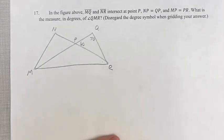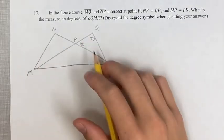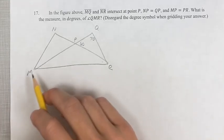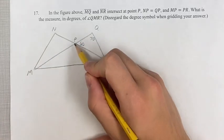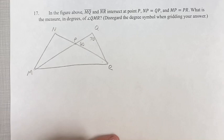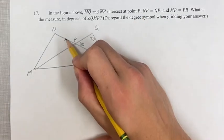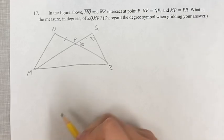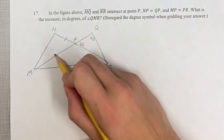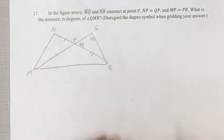Hello and welcome back to another video. In this problem, we're given this diagram where we have MQ and NR intersecting at point P. We have NP equals QP, two sides that are equal, and MP equals PR, so you have these two sides that are equal there.